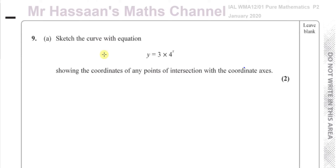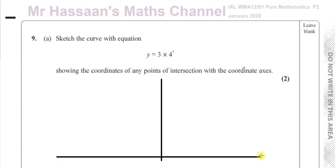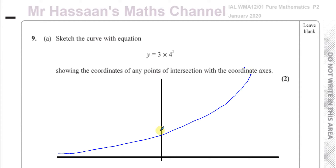This is a curve of exponential type — a slight transformation of 4 to the power of x. Now, 4 to the power of x would be a curve that goes through (0, 1). What's happened here is a vertical stretch: all the y-coordinates are multiplied by 3, so it's going to end up going through (0, 3). We can confirm that algebraically — when x equals 0, y equals 3 times 4 to the power of 0, which is 3 times 1, which is 3.